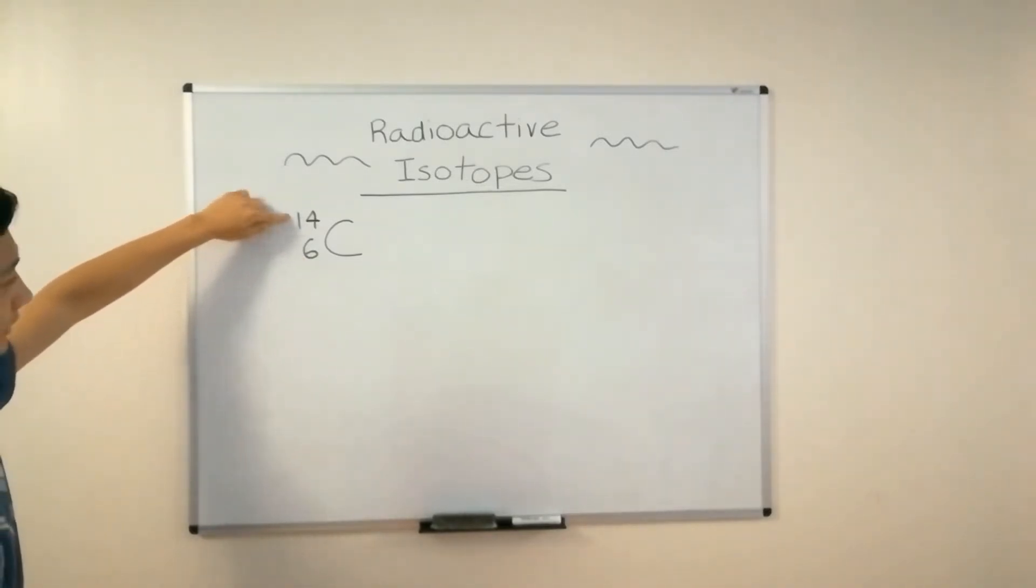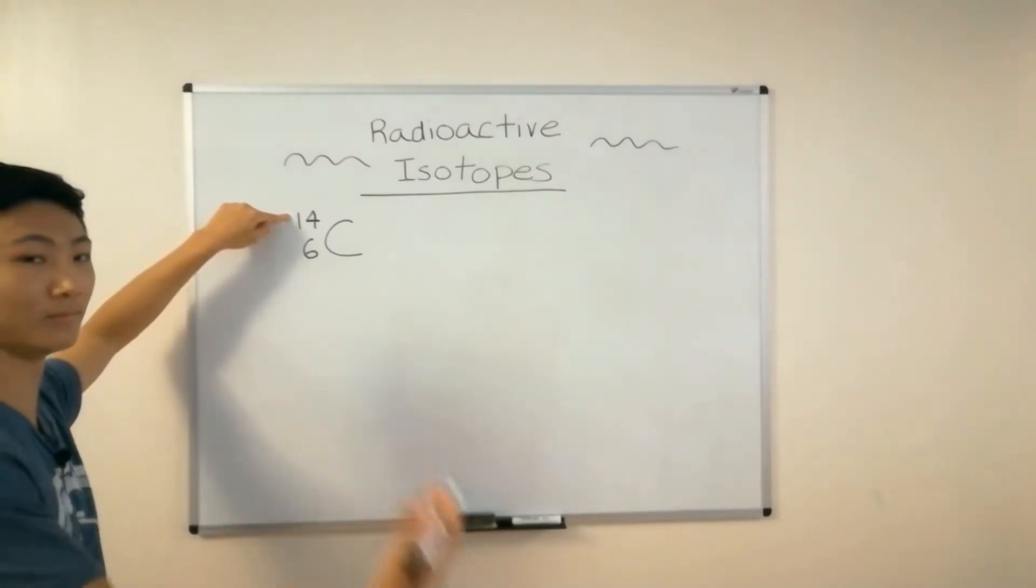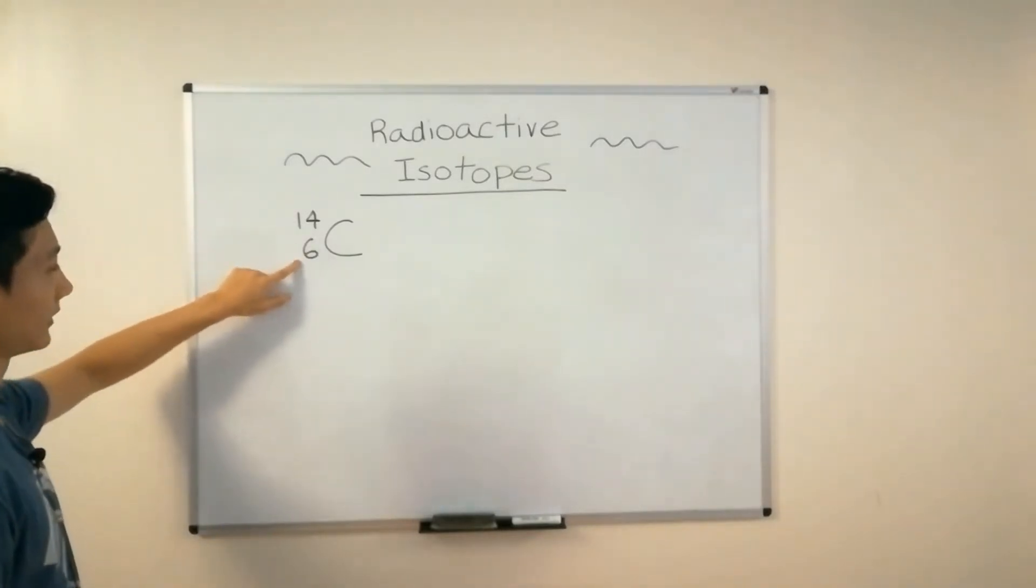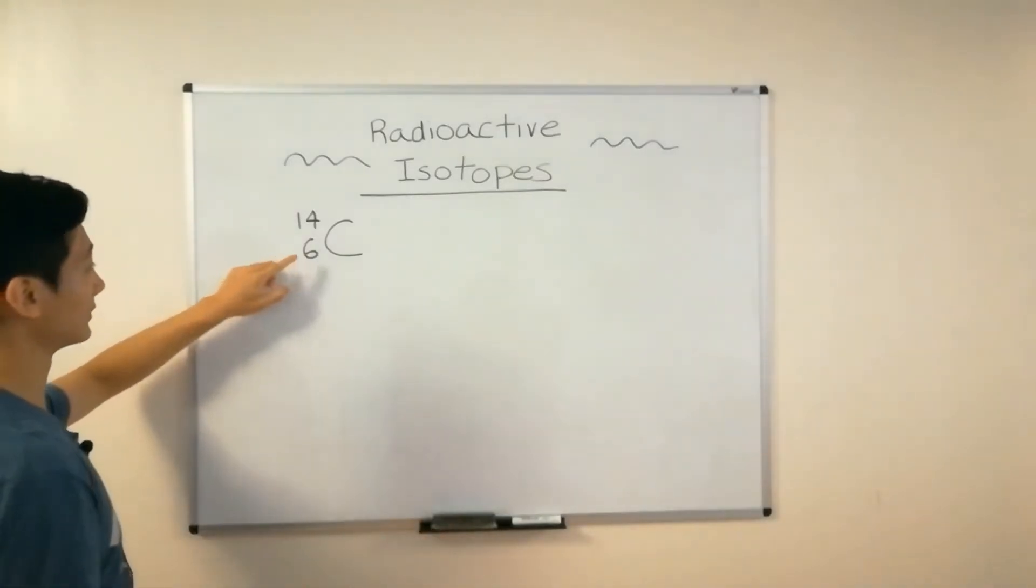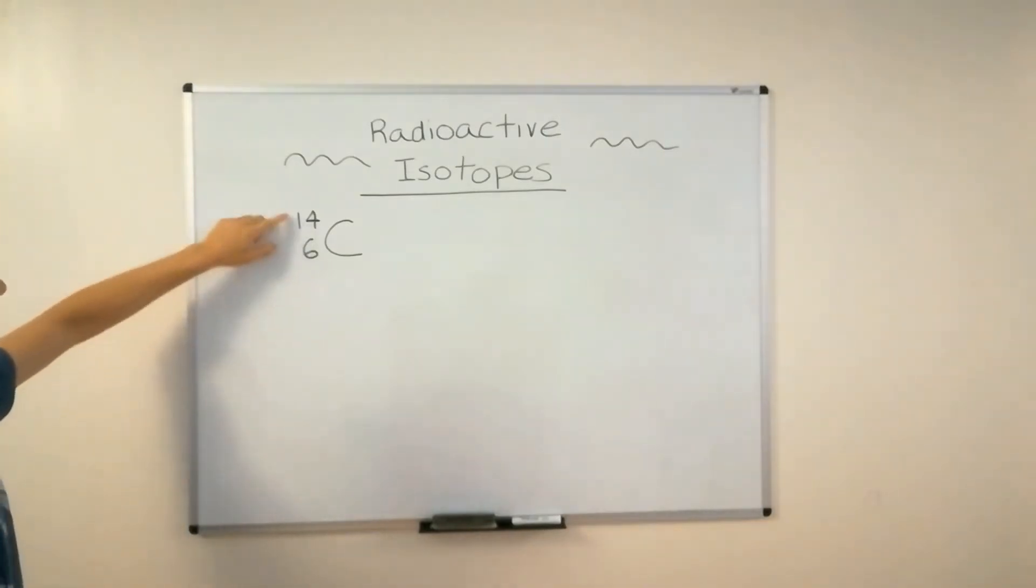Because up here denotes the atomic mass, and down here is the atomic number. So 6 protons and 14 total mass must mean 14 minus 6, 8 neutrons, right?